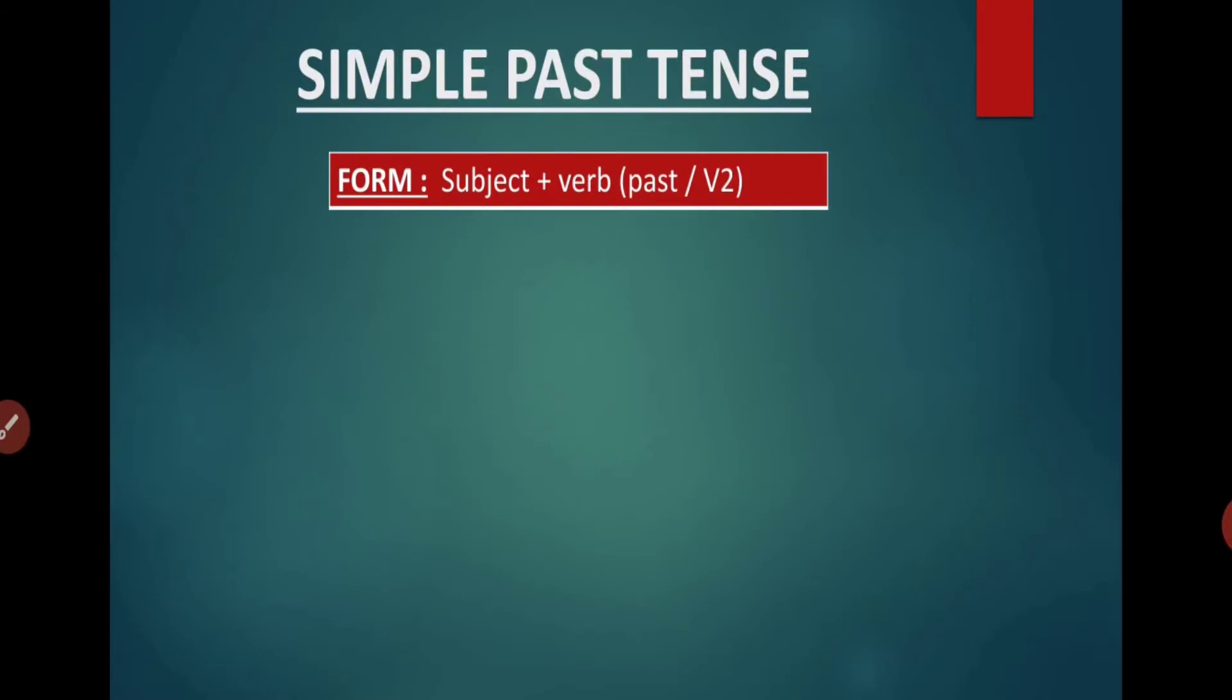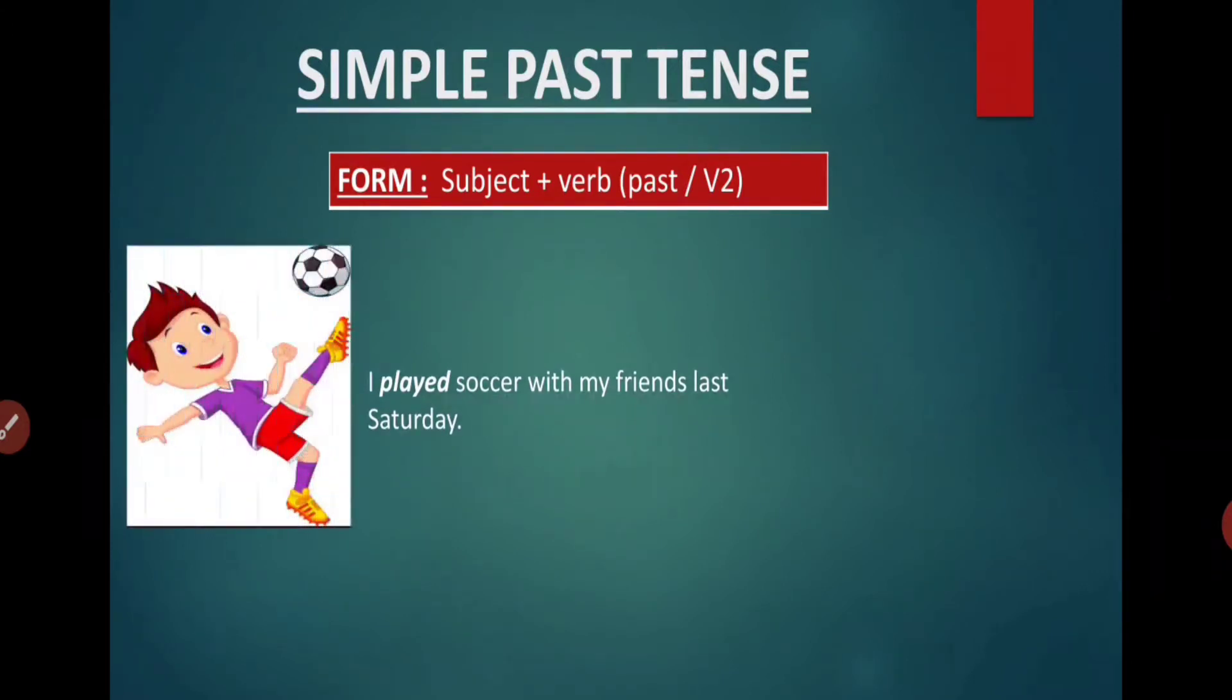Second form of verb is used in simple past tense. So let's have few examples. I played soccer with my friends last Saturday. Played means I'm talking about myself and I played soccer.